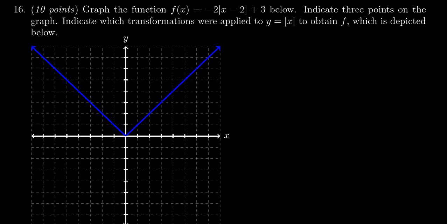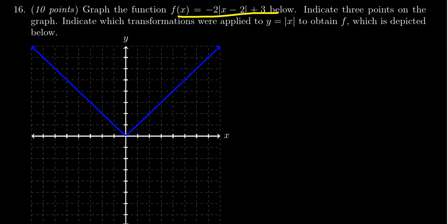In this video we provide the solution to question number 16 from practice exam number one for Math 1050. We have to graph the function f(x) equals negative two times the absolute value of x minus two plus three. There are some instructions that go along the way here. How are we going to graph this?